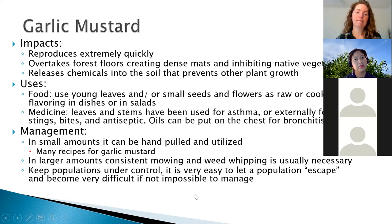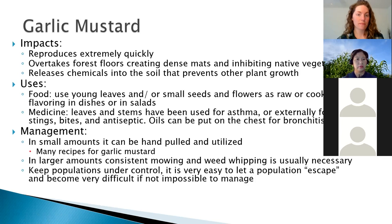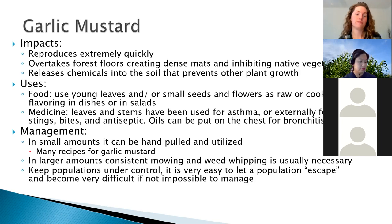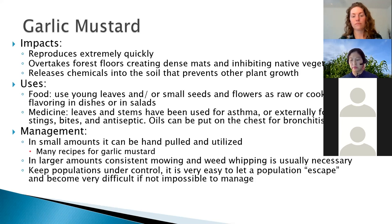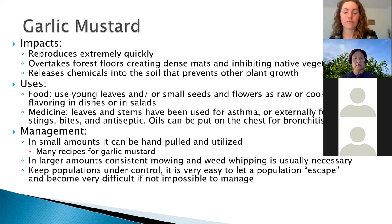Garlic mustard is a really nice one — it spreads everywhere really quickly and takes over forest floors, so you want to keep it in a small population. Luckily, it's super tasty. You can use the young leaves, small seeds, and flowers — cooked or raw in dishes and salads. They've also been used for medicine: using the stems for asthma, or putting the leaves on sting bites as an antiseptic. If you have it and want to keep a small patch, great — just make sure you're staying on top of it every year. Once it escapes, it escapes very quickly and gets really hard to control.